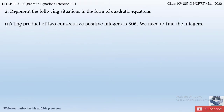The second part of question number 2: the product of two consecutive positive integers is 306. We need to find the integers. First, let us understand what consecutive integers are. Consecutive integers are integers that have a difference of 1. For example, 1 and 2 have a difference of 1; similarly 4 and 5 have a difference of 1. Any two integers with a difference of 1 are called consecutive integers.